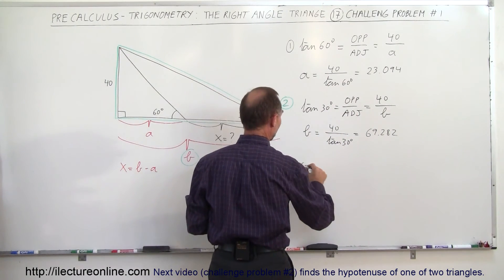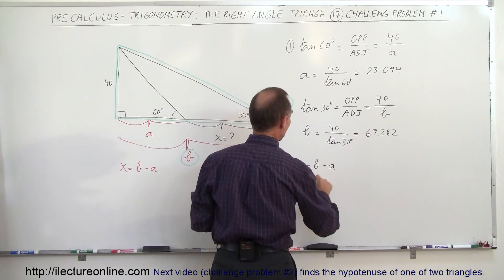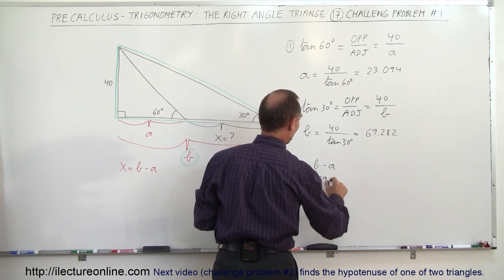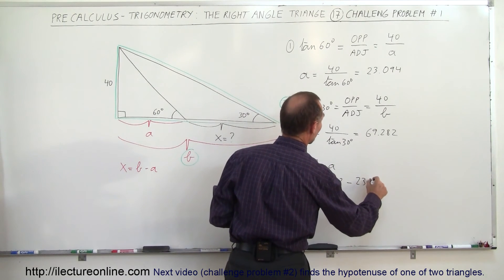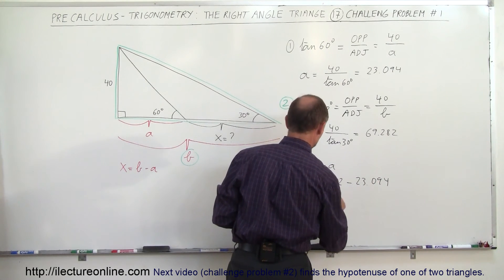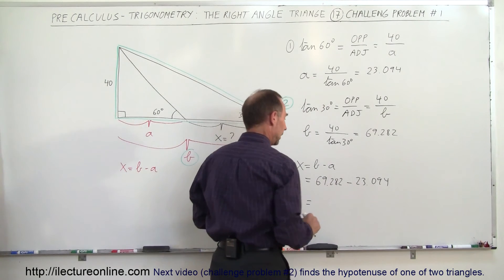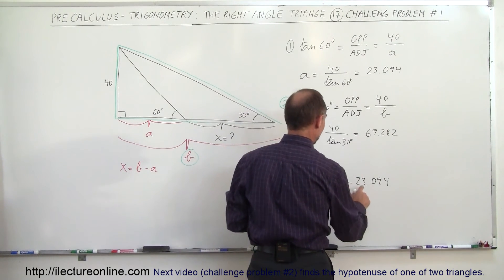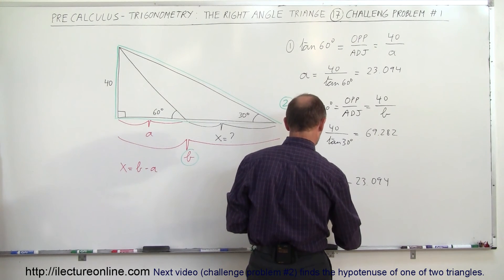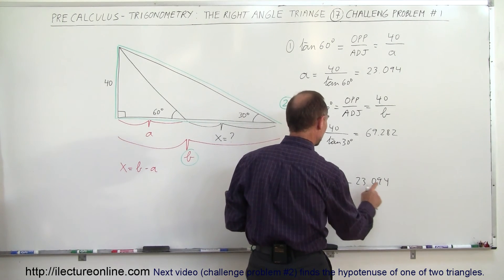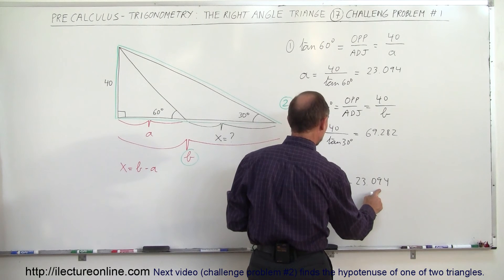And then we said that X is B minus A. So since X is B minus A, B is 69.282 minus A which is 23.094. And let's see here, 69 minus A, that would be 46 point, and 282 minus 094 is 182 plus 6, that's 188. So 46.188, and that would be the length of X.